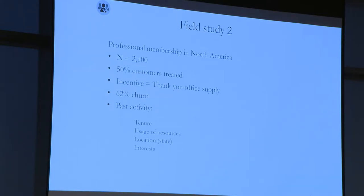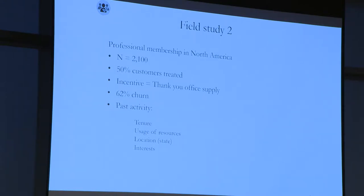The second one is a subscription context. In this case, sample size is way smaller — these people cannot experiment a lot. These 2,100 people are all the ones who were up for renewal at a certain time. So they really cannot sample much. They did a full randomization. In this case, the incentive was not monetary — it was more a 'thank you,' trying to show the customer they are valued.